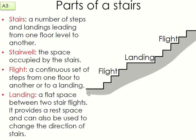A flight is the number of steps that go from, say, ground level to the landing — one, two, three, four — and then another flight from the landing to the second floor. If there's no landing, the flight would be the full continuous set of steps from one level to the other. A landing is a flat space between two flights of stairs. It provides a rest space and can also be used to change the direction of the stairs. Usually you'll have one in your house if your stairs are changing direction.